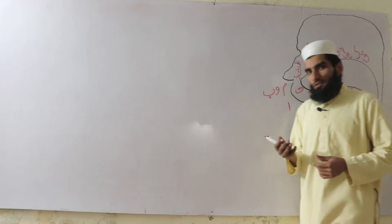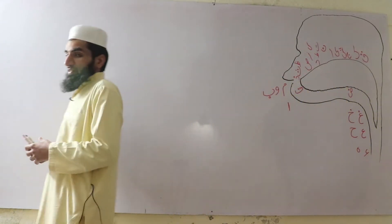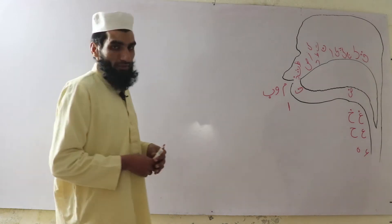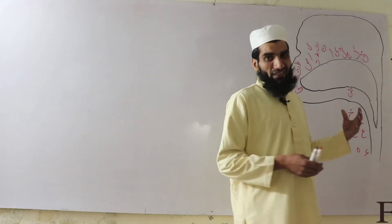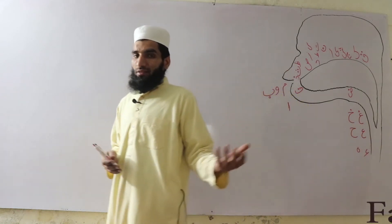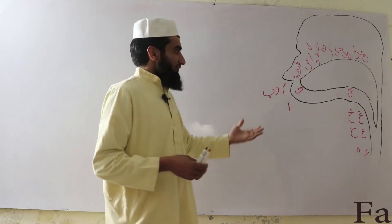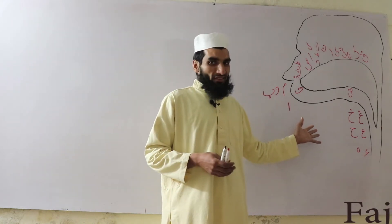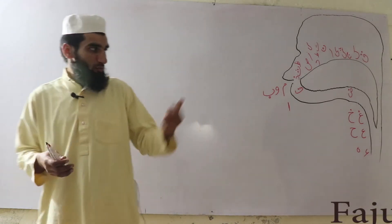Today our lesson is about Arabic alphabetic letters, called in Arabic huruf-e-ta-haji. We will discuss what they are, how many there are, from where we pronounce them, and what their role is in the Arabic language.